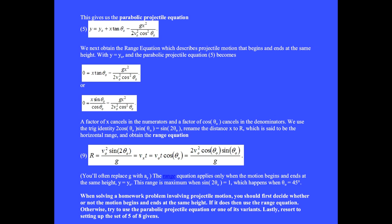The range equation applies only when the motion begins and ends at the same height. We set y equal y₀ and obtained equation 9. We see that the range is maximum when sine 2θ equals zero, which happens when θ is 45 degrees.